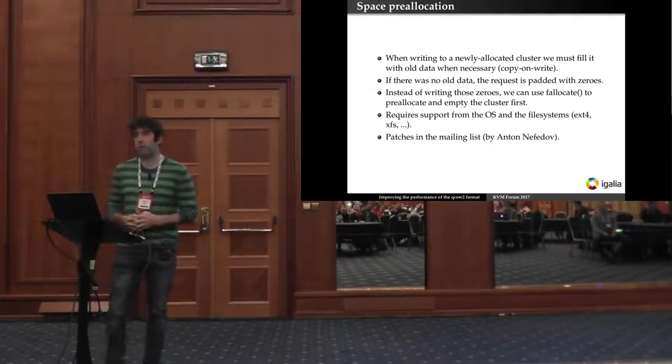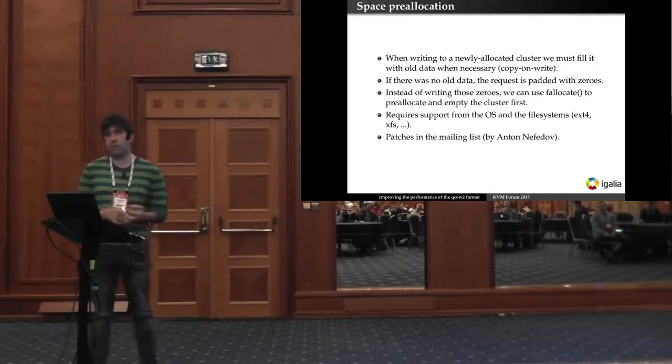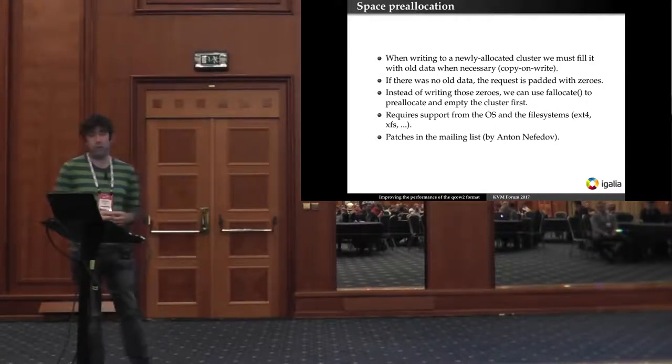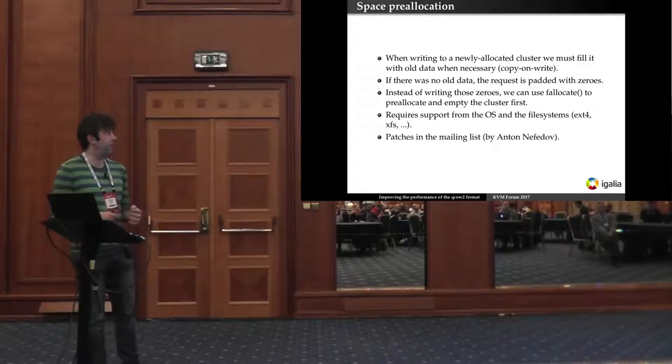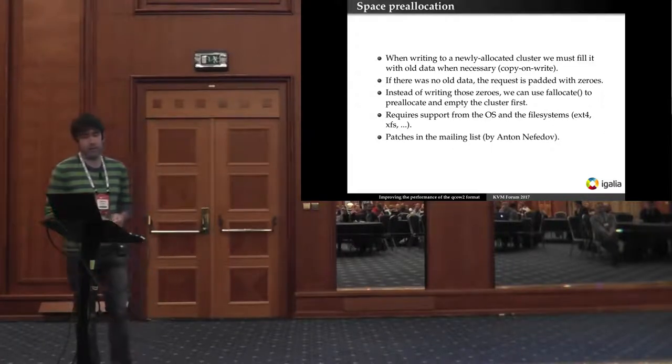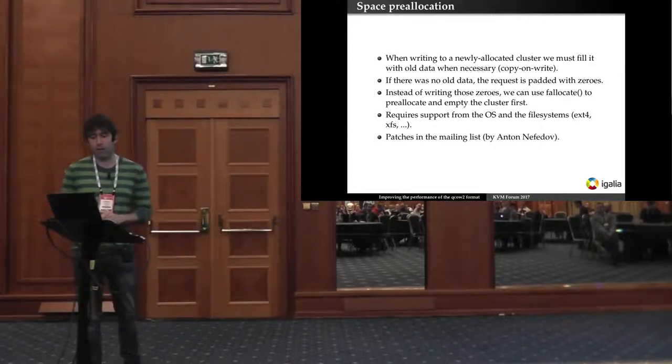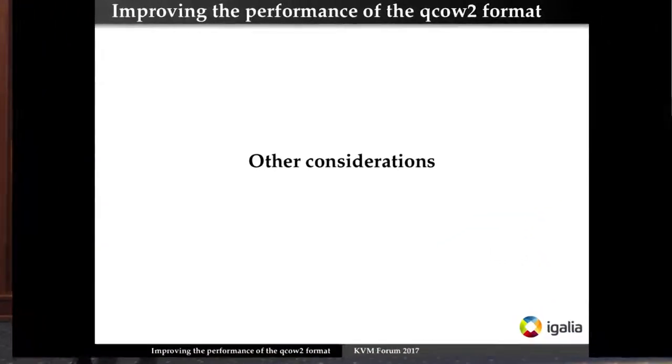One other way to improve allocation is this one. So when we're writing to a newly allocated cluster, we must fill it with the old data, as I said before. If there was no old data, then what QEMU does is pad the request with zeros and writes everything. So in other words, it writes zeros into the disk. So instead of writing those zeros, we could pre-allocate the cluster using F-allocate, and then only write the actual data that the guest was sending. This needs support from the OS and the file system. It should work in EXT4 and XFS, and there's already patches in the mailing list. In this case, I was not involved in this work, but I plan to review it and help bringing it forward.